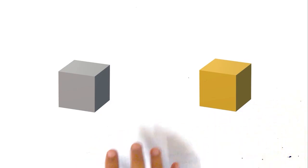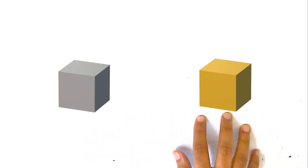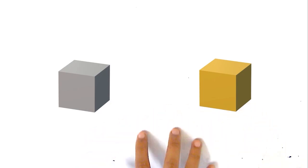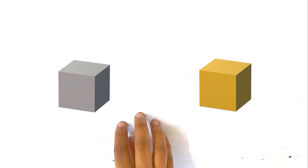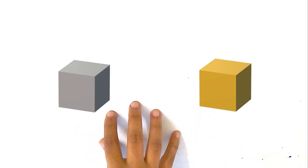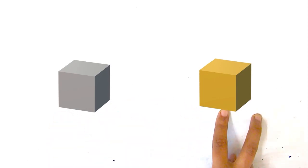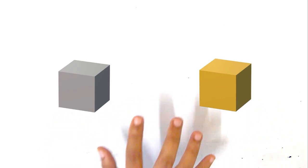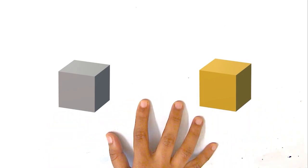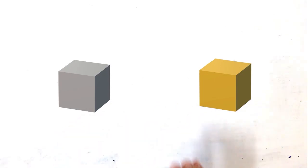Clearly one difference is that one is silver and one is gold, but physically their appearance is identical — one shape and one size. If we measure these two cubes, they are the same size, but different materials: silver and gold.